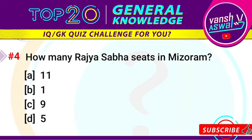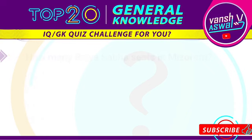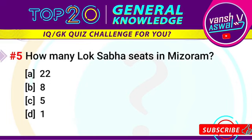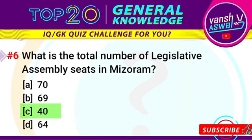Our fourth question is: how many Rajya Sabha seats are in Mizoram? The right answer is one seat. Sixth question: what is the total number of legislative assembly seats in Mizoram? The correct answer is 40 seats.